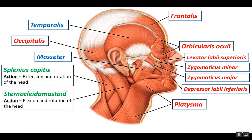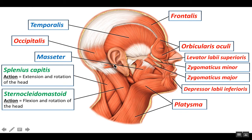Let's first look at the splenius capitis. The word splenius is derived from bandage because someone thought it looked like a bandage on the back of the neck. Most of these muscles were identified and named in a cadaver, so if we were to look at a cadaver in the back of the neck, it would look like there are bandages on the back of their neck. Capitis refers to the head, and that's where it inserts — at the mastoid process, located just behind your ear.